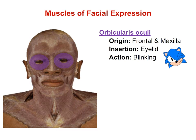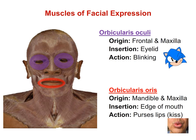We also have a second orbicularis muscle: the orbicularis oris. Oris refers to the oral cavity or mouth. The origin is the mandible and maxilla — the upper and lower jaws — and the insertion is the skin on the edge of the mouth. The orbicularis oris helps us to purse our lips, as in kissing or whistling.